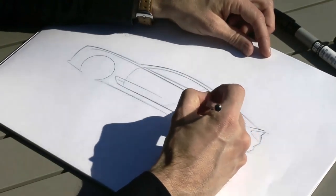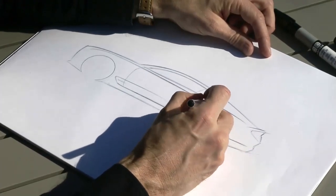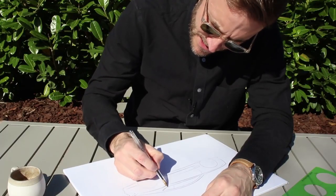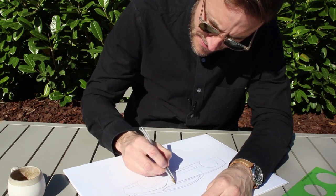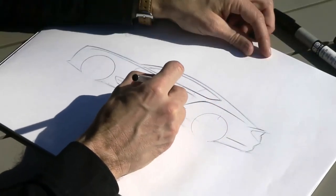So you can see how these lines all fade in the same area. You've got the haunch here, you've got the kick up in the side glass, and then you've got the power line finishing as well.